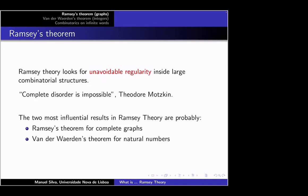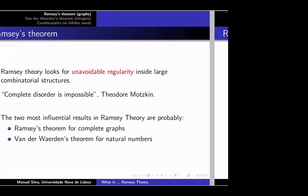In the third part of the talk I will describe Ramsey-type results in combinatorics on infinite words. Ramsey theory looks for unavoidable regularity inside large combinatorial structures. As Theodore Motzkin the mathematician said: 'complete disorder is impossible.' The two most influential results in Ramsey theory are most probably the original Ramsey theorem for complete graphs and the van der Waerden theorem, a regularity result about arithmetic progressions inside partitions of the natural numbers.